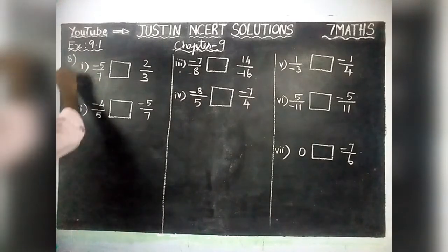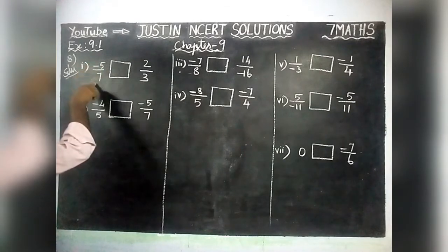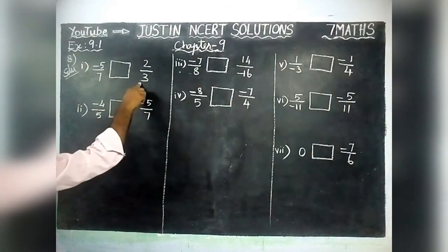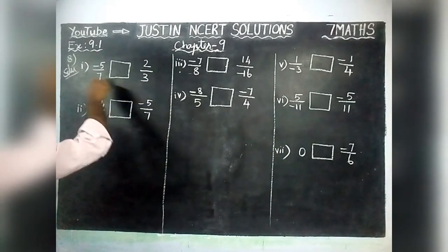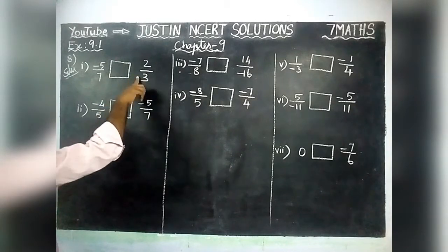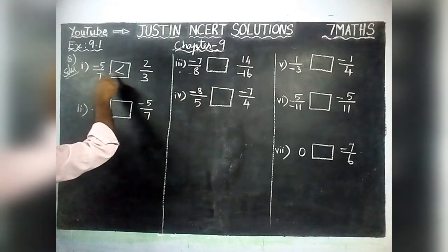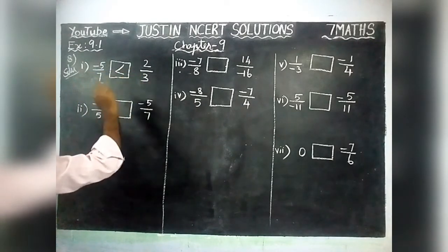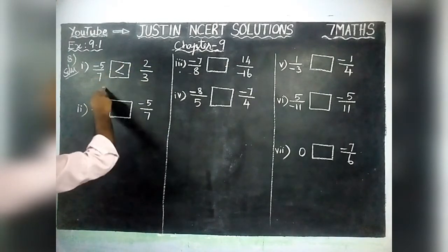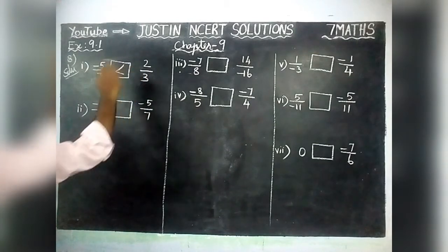The first question: left-hand side is minus 5 by 7 and right-hand side is 2 by 3. Here we don't have any confusion — this is a negative number, this is a positive number. Always positive rational number is the highest value. So, less than symbol: minus 5 by 7 is less than 2 by 3. We don't need to worry about the denominators being different.